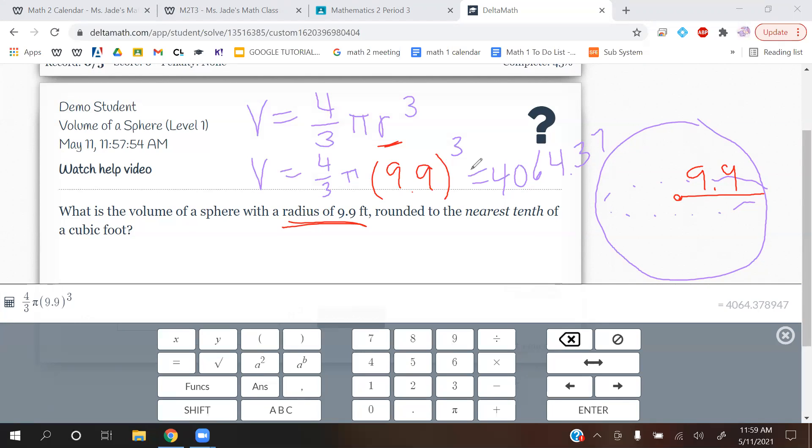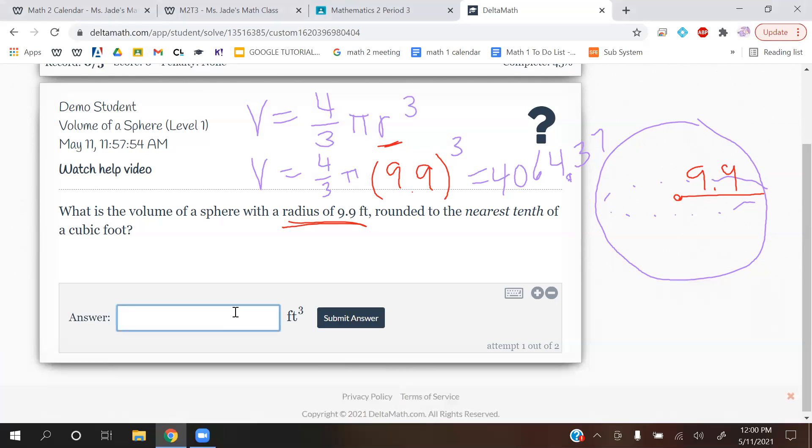Again, you want one decimal place. So that's going to be that 3 in question. And then after 3 comes the 7. 7 is a big number. So this gets rounded up to become a 4. So let me write it up. 4064.4. It's 0.4 because the 3 got rounded up.